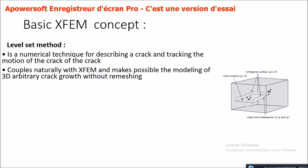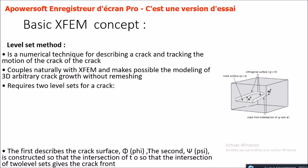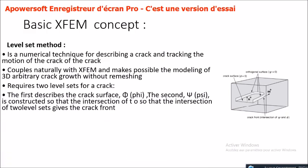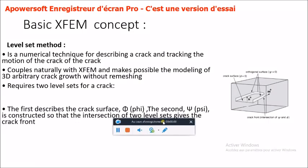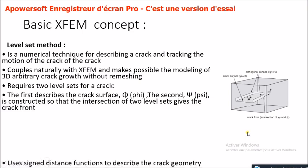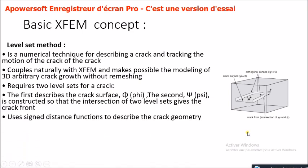The second concept is the level set method. The level set method is a numerical technique for describing a crack and tracking the motion of the crack. It couples naturally with XFEM and makes possible the modeling of 3D arbitrary crack growth without remeshing. It requires two level sets for a crack: the first describes the crack surface (phi), and the second (psi) is constructed so that the intersection of the two level sets gives the crack front. It uses signed distance functions to describe the crack geometry, so no explicit representation of the crack is needed — the crack is entirely described by nodal data.